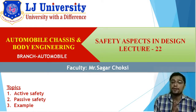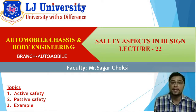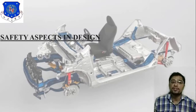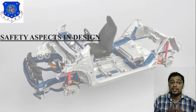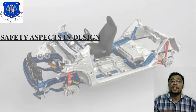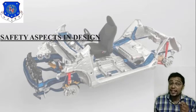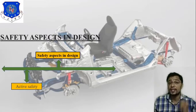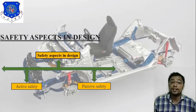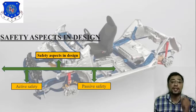Lecture number 22 is related to safety aspect in design. So what is safety aspect? When you simulate your model there are some spare parts to consider. There are mainly two types of safety — I have attached one table related to safety aspect in design. First one is active safety and second one is passive safety.